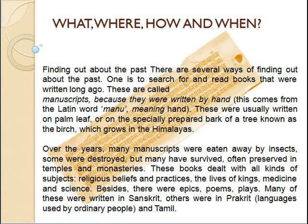Finding out about the past: there are several ways to find out about the past. One is to search for and read books that were written long ago. These are called manuscripts because they were written by hand — this comes from the Latin word 'manu,' meaning hand. These were usually written on palm leaf or on the specially prepared bark of the birch tree, which grows in the Himalayas. Over the years, manuscripts have been eaten away by insects, some destroyed, and many have survived, often preserved in temples and monasteries.